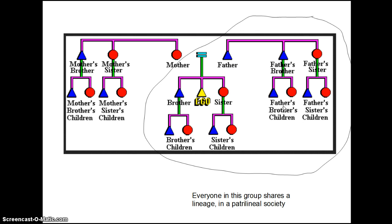Let's explain what a patrilineal society is. Starting from ego — everybody who is related to ego through ego's father is in his lineage. Ego here is male because he's a triangle. You don't, however, have to be male to be in someone's patrilineage. Because ego's father's sister is related to him through his father, she and all of her children are also in his patrilineage. One advantage of doing it this way is that everybody always knows what lineage they belong to. Because we in our society count descent from both sides, the only people in the world who have the exact same family as you are your brothers and sisters.